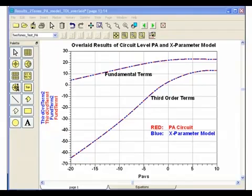The best way to show the accuracy of the model as compared with the circuit level design is to overlay the two results on top of each other. What you see here are the overlaid results of the fundamental tones and the third-order terms of both the X-parameter model, shown in blue, and the circuit level PA, shown in red. The results are identical and the model is very accurate.